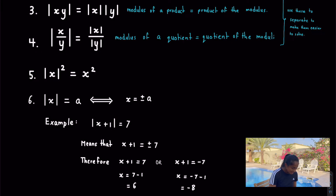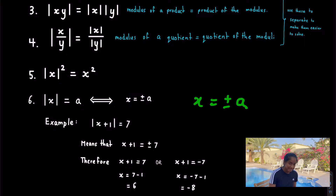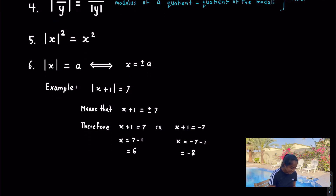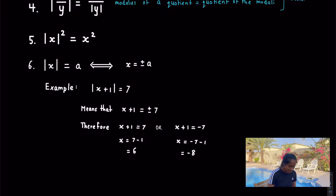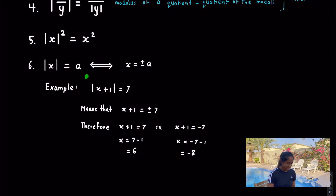Rule 6: the modulus of x equals a can be interchanged with x equals plus or minus a. For example, if given the modulus of (x plus 1) equals 7, that means x plus 1 equals plus or minus 7. From there, equate to 7 and to minus 7 and solve for x, giving two solutions.